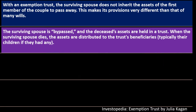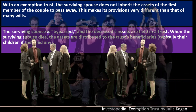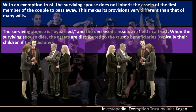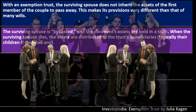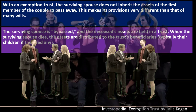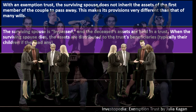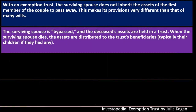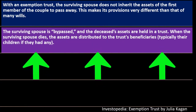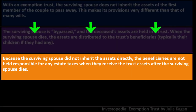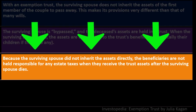A trust, like a corporation, is a separate legal entity which can own things. One characteristic of a corporation is that it can theoretically not die — it can continue on and ownership can be passed along. Similarly, when the surviving spouse dies, the assets are distributed to the trust beneficiaries — typically their children. Because the surviving spouse did not inherit the assets directly, the beneficiaries are not held responsible for any estate taxes when they receive the trust assets after the surviving spouse dies.